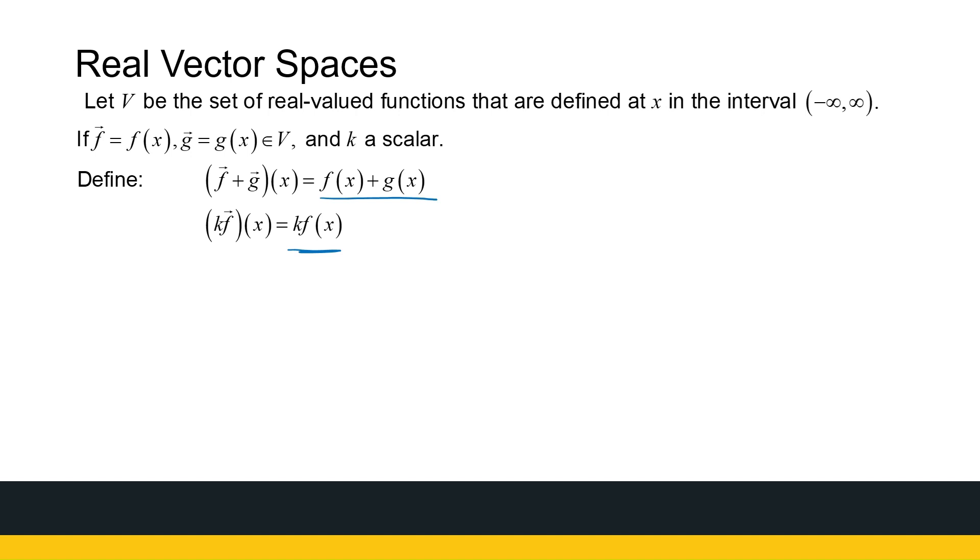Then this set is also a vector space. The zero vector will just be the function f of x equal to zero, the zero function. The negative of a function will just be as we understand the negative of a function to be. So we've worked a lot on functions, so all the axioms you can check. The set of functions with standard operations will be a vector space.